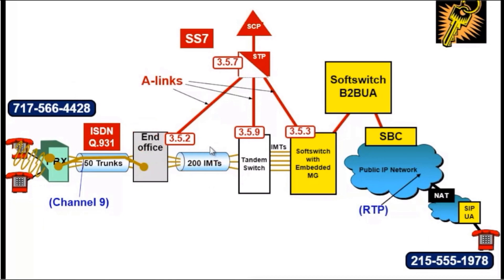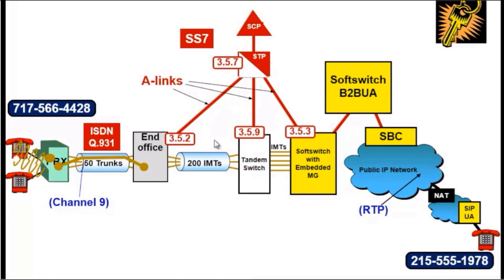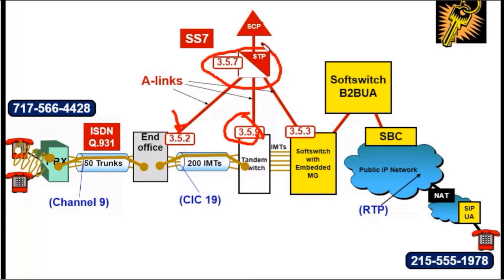Let's assume that none of those trunks are busy right now. Our end office was provisioned to know that signaling system 7 point code 3.5.9 is how to talk to our next tandem switch. So an initial address message is sent. The initial address message is going to destination 3.5.9 from the originating point code 3.5.2. A signal transfer point, which looks more like a router than a telephone device, simply responded to the destination point code 3.5.9 and relayed the initial address message to our tandem switch.